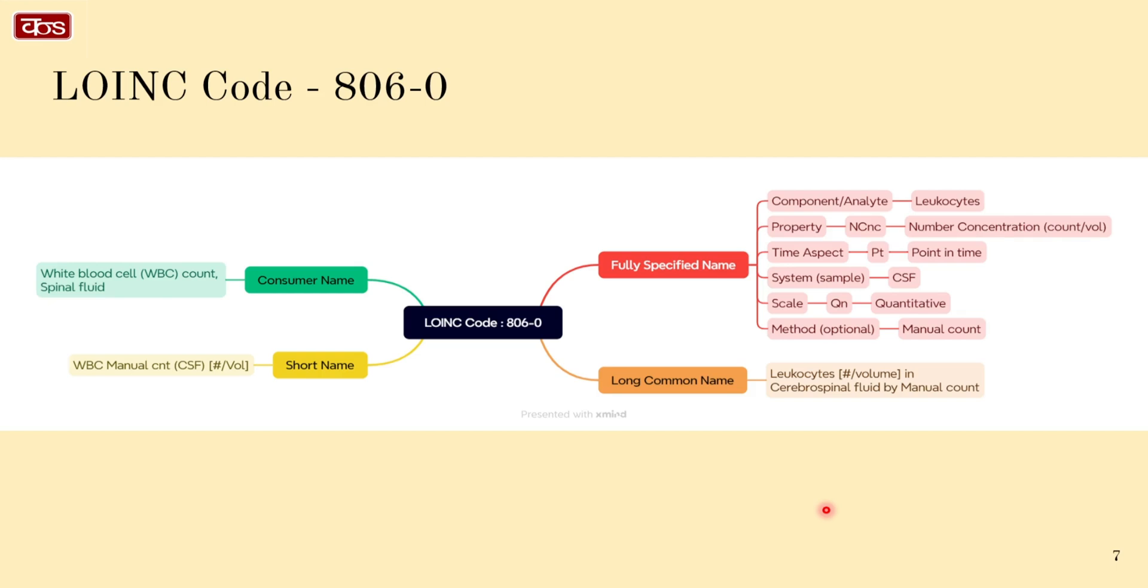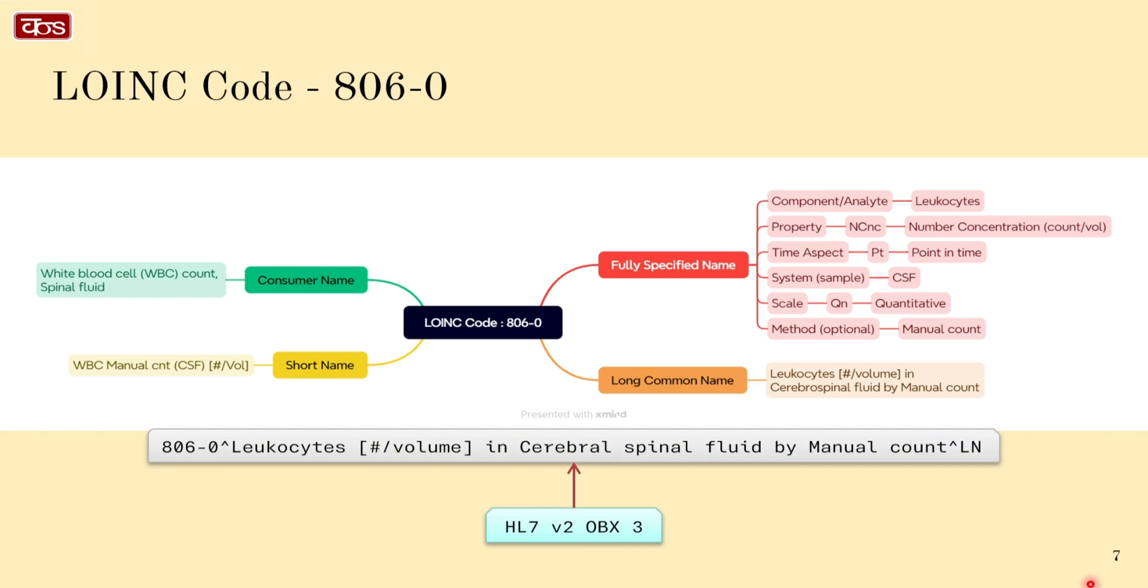This is the mind map for LOINC code 806-0. The long common name is leukocytes as numbers by volume in CSF by manual count. The short name is a bit better. The consumer name here is much better than in the previous one, and the HL7 v2 OBX-3 segment looks like this.